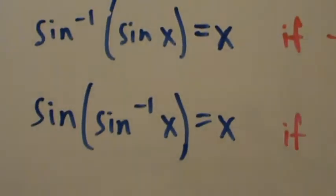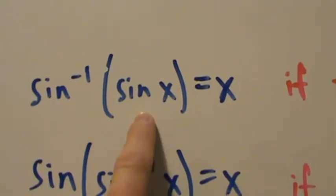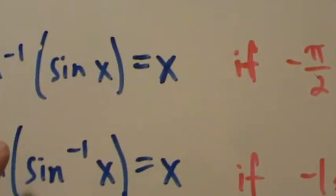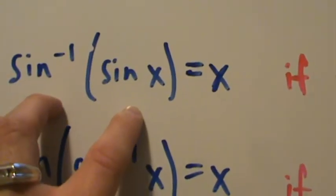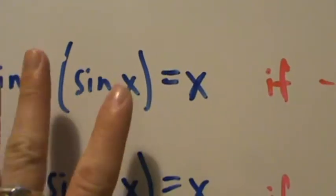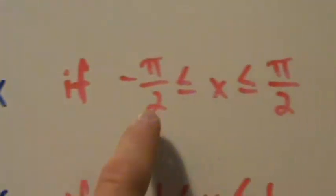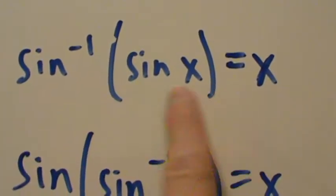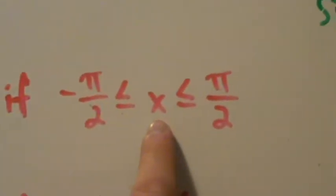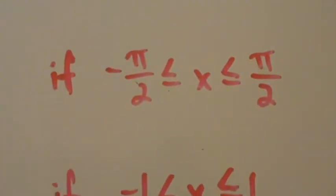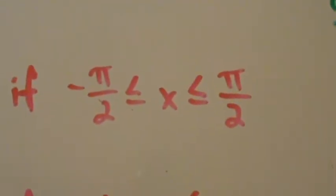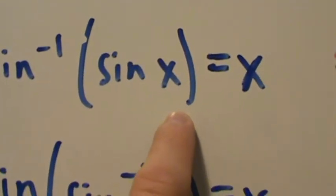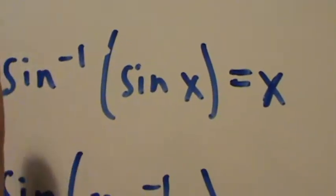Here are some properties. The inverse sine of the sine of x equals x if x is between negative pi over 2 and positive pi over 2. Remember, that's the nice cancellation property of functions and their inverses. But because we had to restrict the domain of the sine function, we have to make sure that x is between negative pi over 2 and positive pi over 2 before using this cancellation property. If x is not in that range, we can still work with it, but we can't cancel — we'll talk about that in a later video.